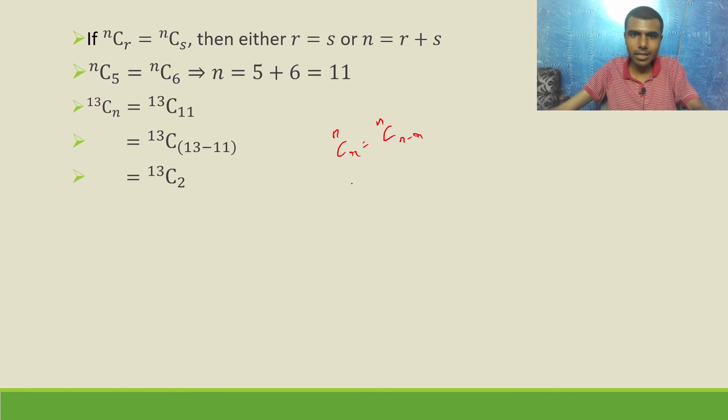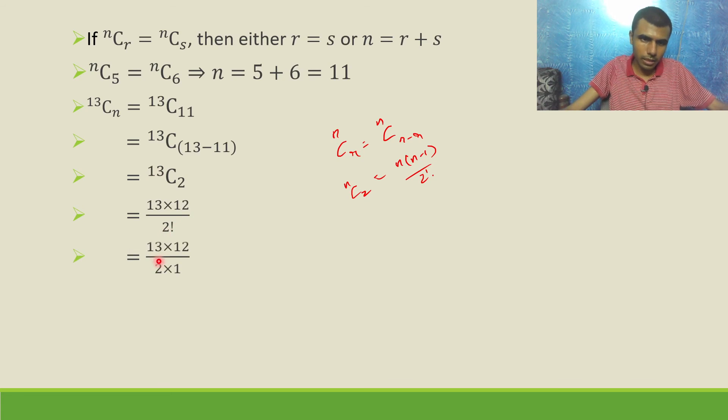13C2, NC2 is what? NC2 is nothing but N into N minus 1 by 2 factorial. Two terms in the numerator and two factorial in the denominator. So this will be 13 into 12 by 2 factorial. 13 into 12 by 1 into 2. Two into one is 2, so 6. 13 into 6 is 78.